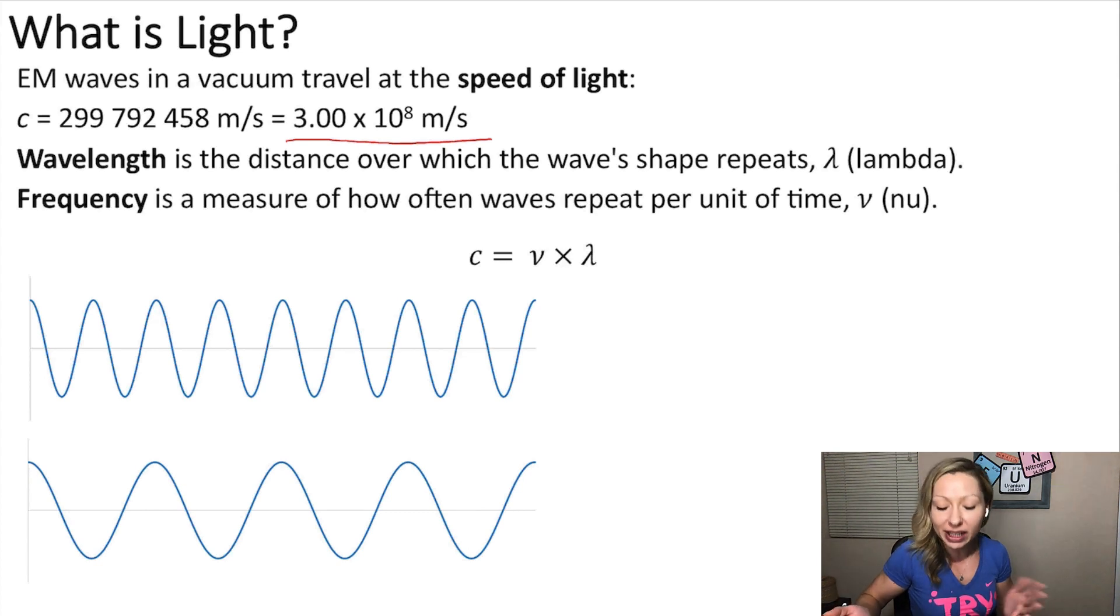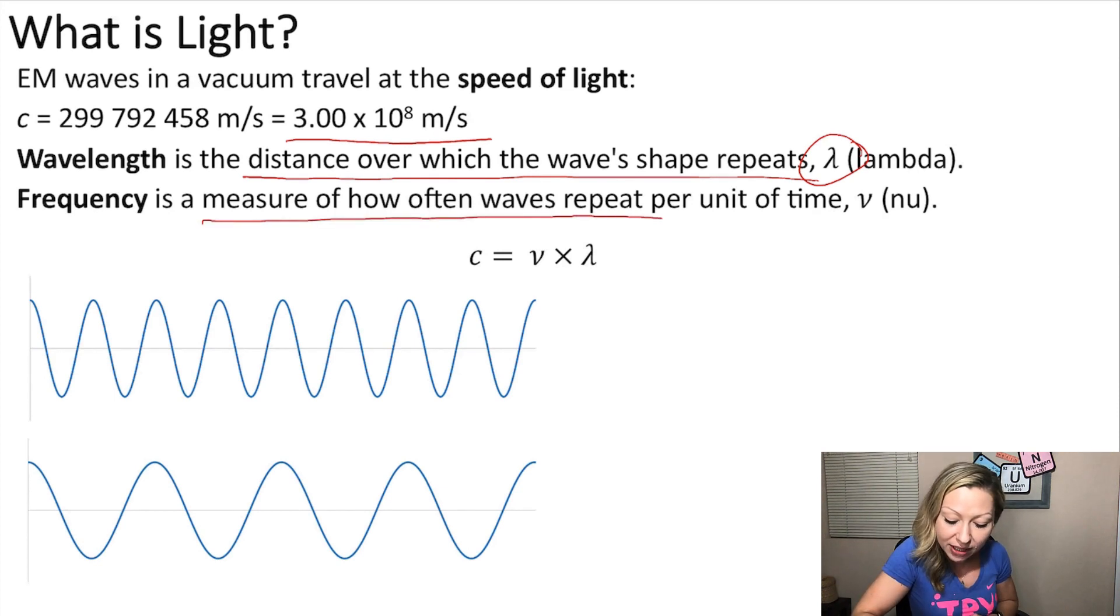Okay, so what is a wavelength? Wavelength is a distance over which the waves shape repeat. It is denoted with the Greek letter lambda and the frequency is simply the measure of how often these waves repeat per unit of time denoted with the Greek letter nu. And they are connected through the speed of light.